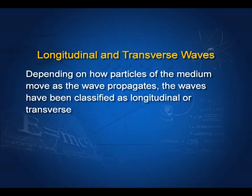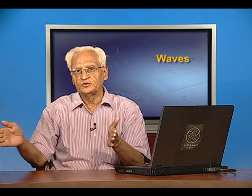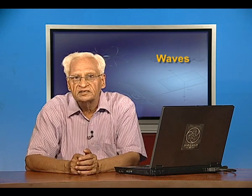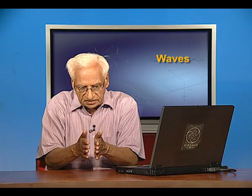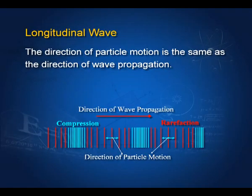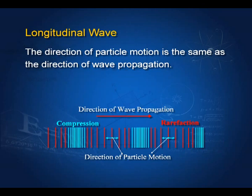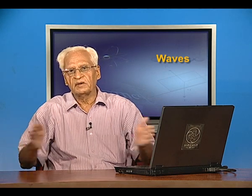Depending on how particles of the medium move as the wave propagates, waves are classified as longitudinal or transverse. If the wave moves in one direction and particles also oscillate in that same direction, this is a longitudinal wave. If particles oscillate perpendicular to the direction of wave motion, this is a transverse wave. In longitudinal waves, since particles move in the same direction as the wave, there are regions where particles are concentrated — called compressions — and regions where particles are far apart — called rarefactions.